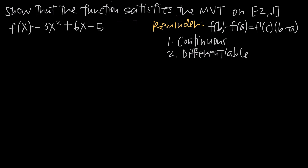What the mean value theorem tells us is that if a function is continuous and differentiable on an interval, then there must be a point inside of the interval where the tangent line to the function at that point is parallel to the line that connects the endpoints of the interval.